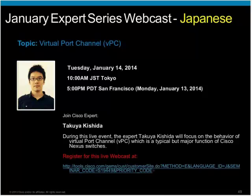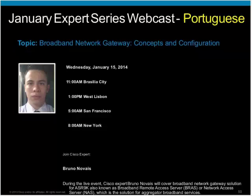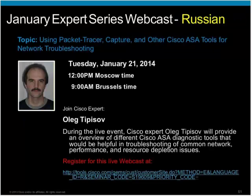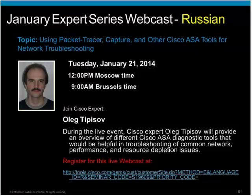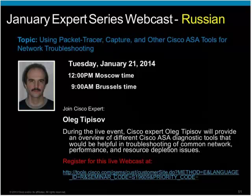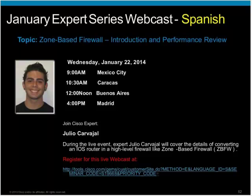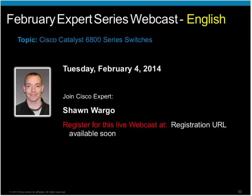There is an upcoming webcast in Japanese on Tuesday, January 14th — the topic will be Virtual Port Channel (VPC). There is another webcast on January 15th in Portuguese — the topic will be Broadband Network Gateway Concepts and Configuration. On January 21st there is a webcast in Russian on Using Packet Tracer, Capture, and other Cisco ASA tools for network troubleshooting. There is also a webcast in Spanish on Zone-Based Firewall Introduction and Performance Review. And an upcoming webcast in English on February 4th on Cisco Catalyst 6800 series switches.